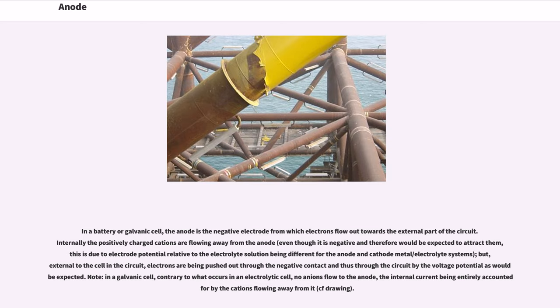In a battery or galvanic cell, the anode is the negative electrode from which electrons flow out towards the external part of the circuit. Internally the positively charged cations are flowing away from the anode, even though it is negative and therefore would be expected to attract them. This is due to electrode potential relative to the electrolyte solution being different for the anode and cathode metal/electrolyte systems. But external to the cell in the circuit, electrons are being pushed out through the negative contact and thus through the circuit by the voltage potential as would be expected.